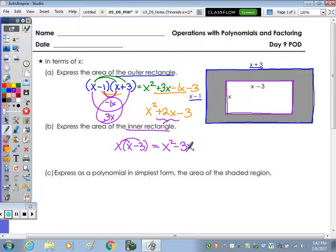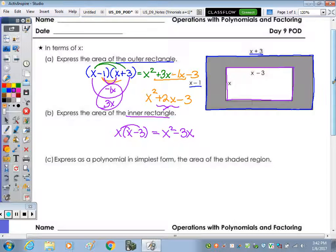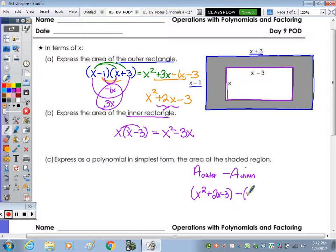Express as a polynomial in simplest form, the area of the shaded region. Well, to find the area of the shaded region, we take the area of the outer rectangle and subtract the area of the inner. So the polynomial for the outer is x squared plus 2x minus 3. And the polynomial for the inner is x squared minus 3x.